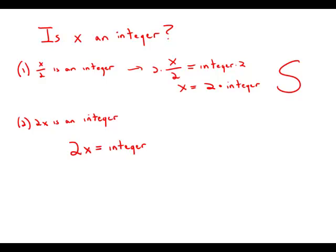What this means, again, to solve for x, we'd have to divide by 2. So we get that x equals an integer divided by 2. Well, if we take an integer and divide by 2, it's not necessarily another integer.